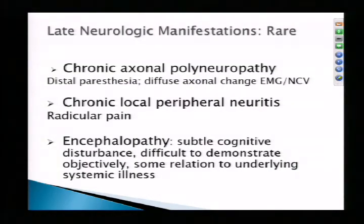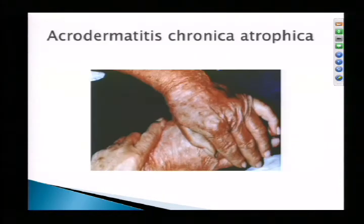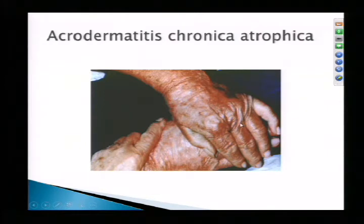Late neurologic manifestations are rare. Chronic axonal polyneuropathy can be present, manifesting in distal paresthesias, with diffuse axonal change found on EMG and NCV. Patients can have chronic local peripheral neuritis and radicular pain. The encephalopathy is a bit unclear, as it is often difficult to objectively demonstrate cognitive impairment. Many experts believe the reported fogginess may be more related to underlying systemic illness rather than chronic active neurologic infection. This is a picture of acrodermatitis chronica atrophica — showing skin atrophy with a violaceous or deep red color, found in European Lyme disease.